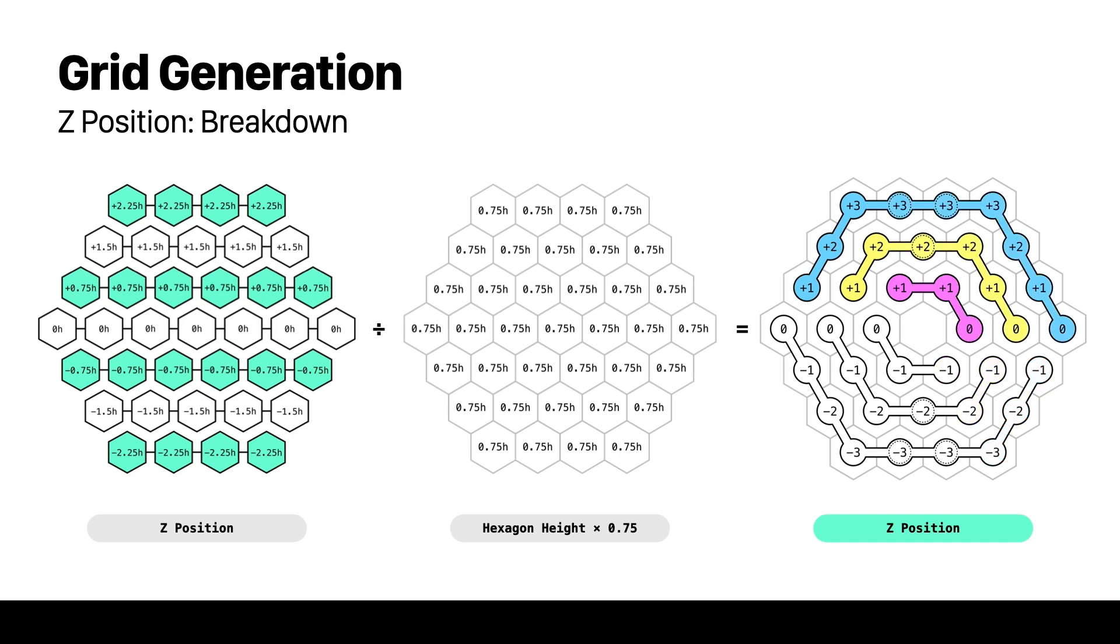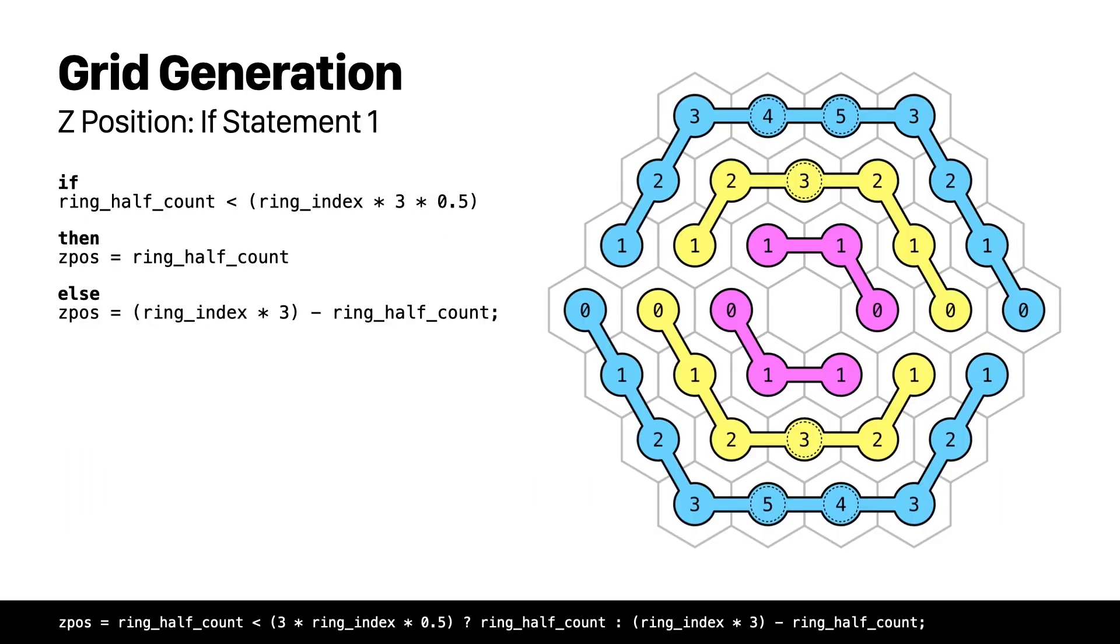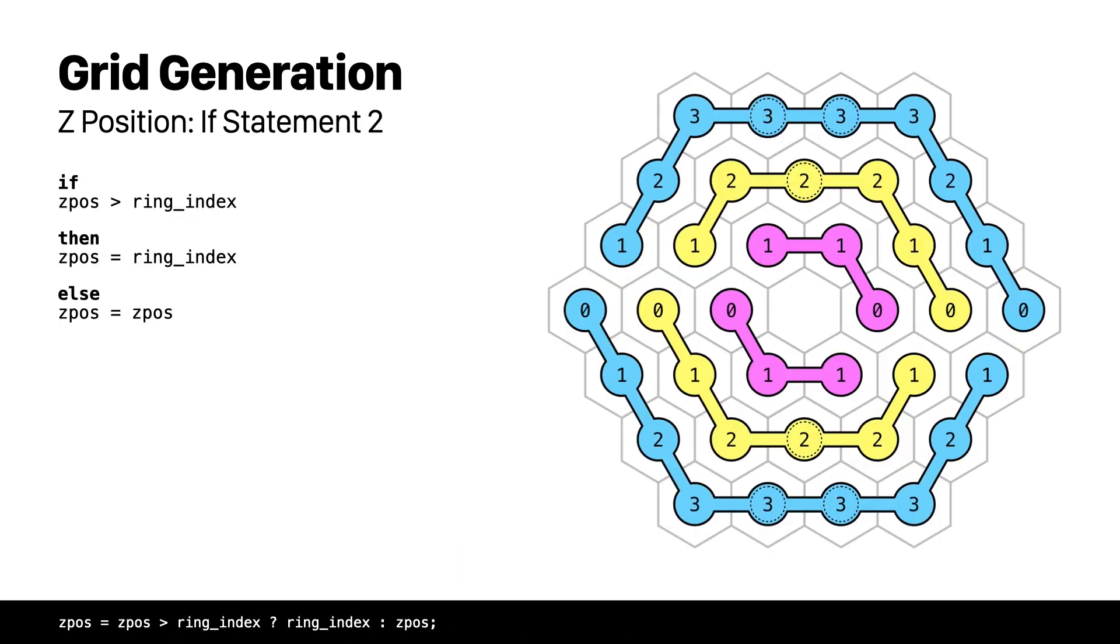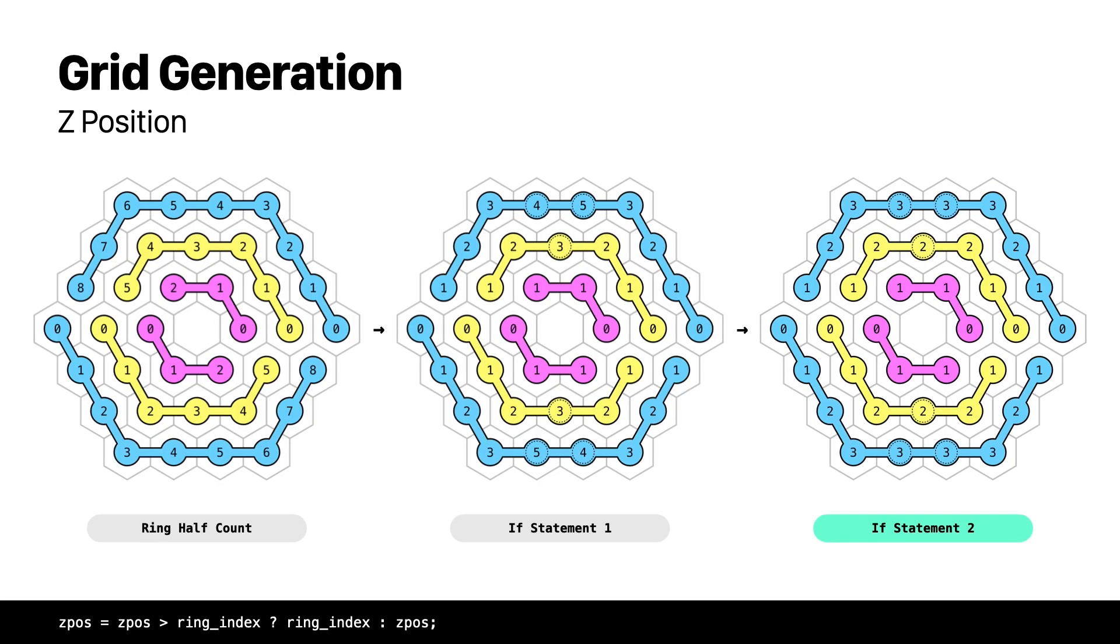This pattern starts with values that have a positive sign and then change to a negative sign. To start with we will use an if statement using the ring half count as the iterator. When the iterator reaches the value of the ring index we want to multiply the ring index value with 3 and then for each step decrease it by 1. This way it's going to end at the value of 1. We see that we're very close to the sequence with the exception of those dotted line circles that need to have the value of the ring index. We will then use another if statement to replace the values that are bigger than the ring index with the ring index value itself.